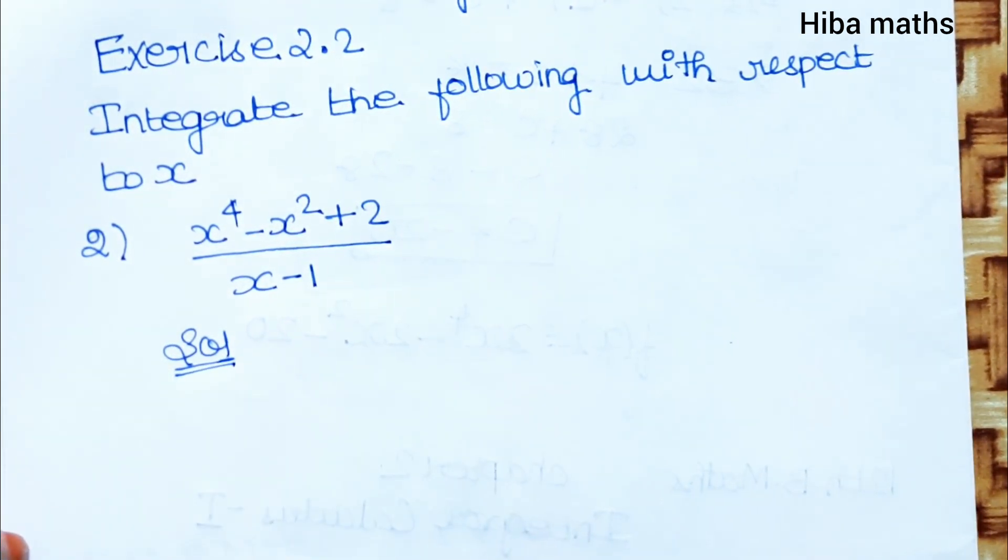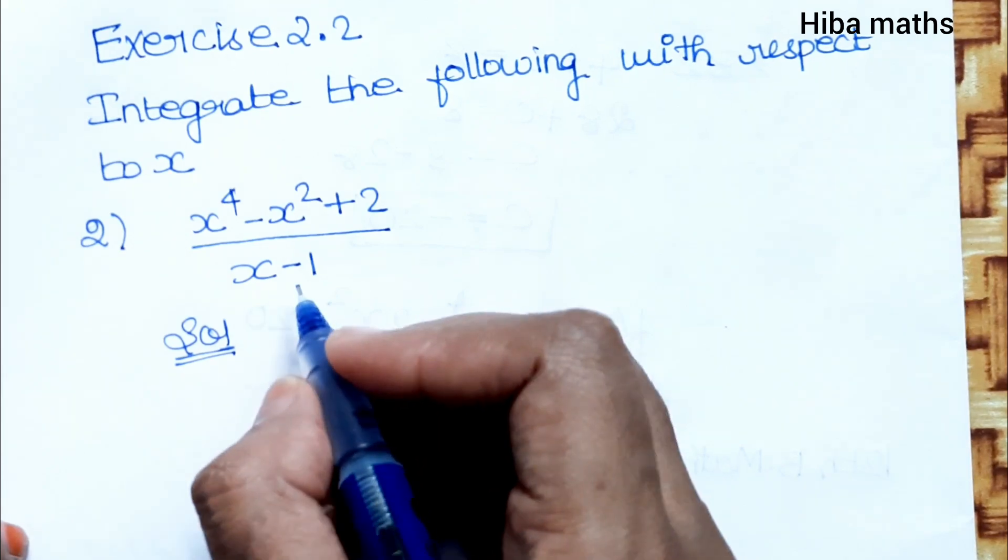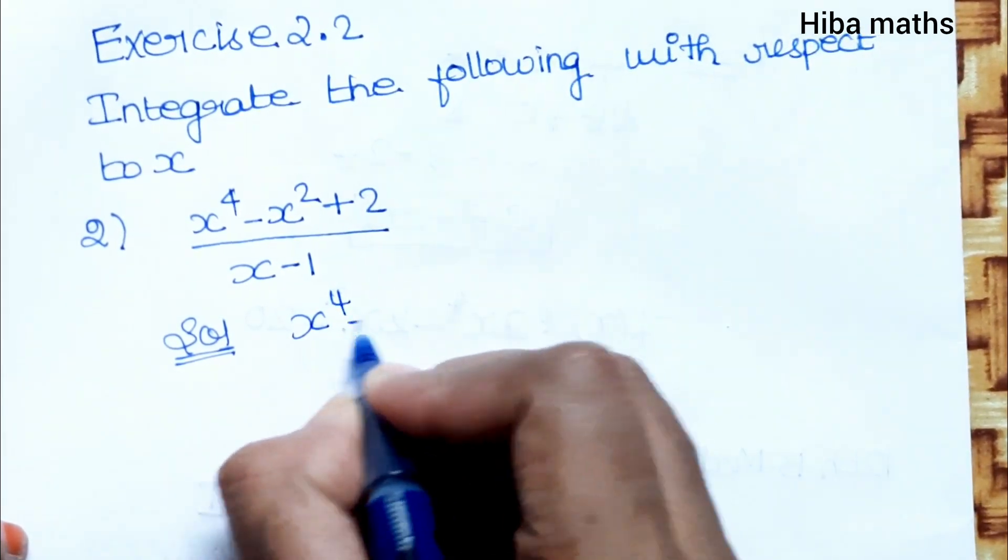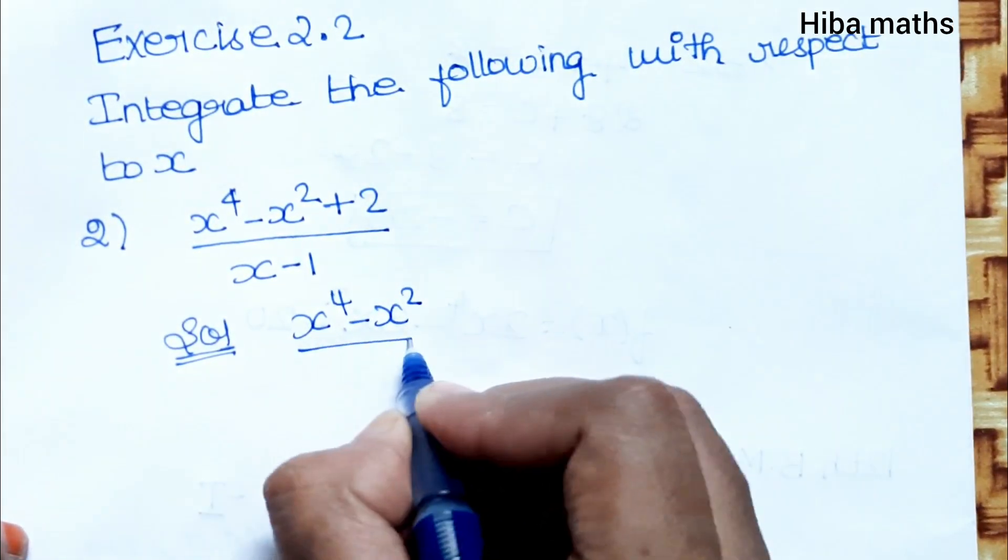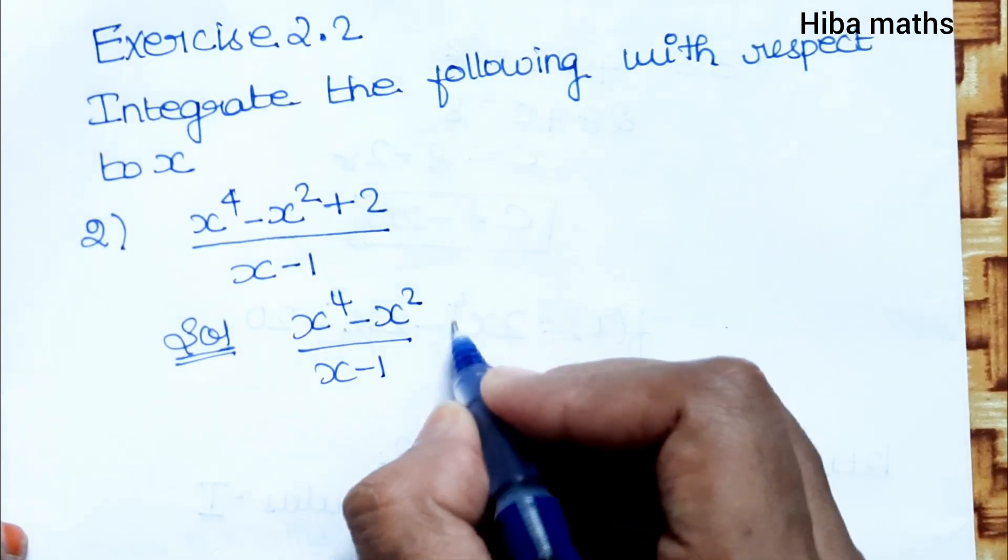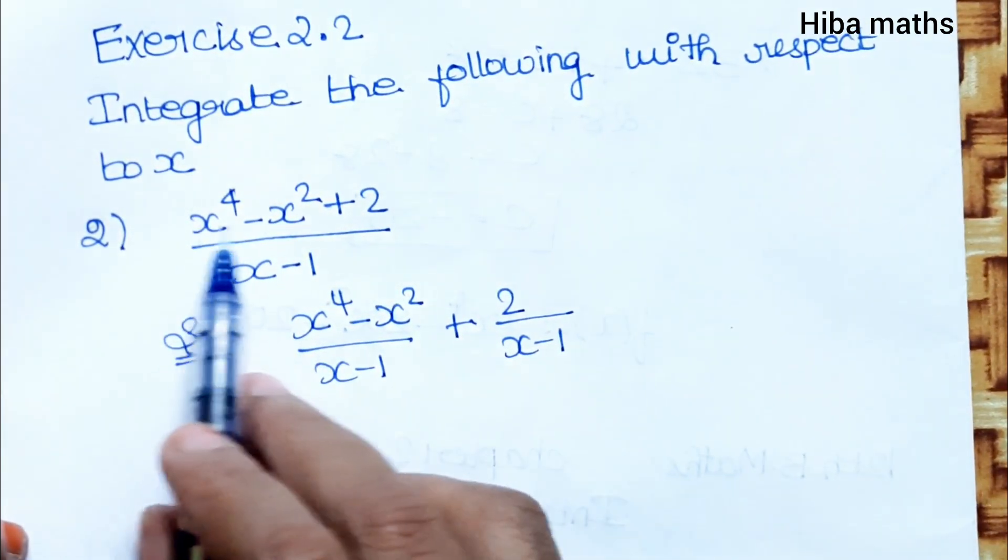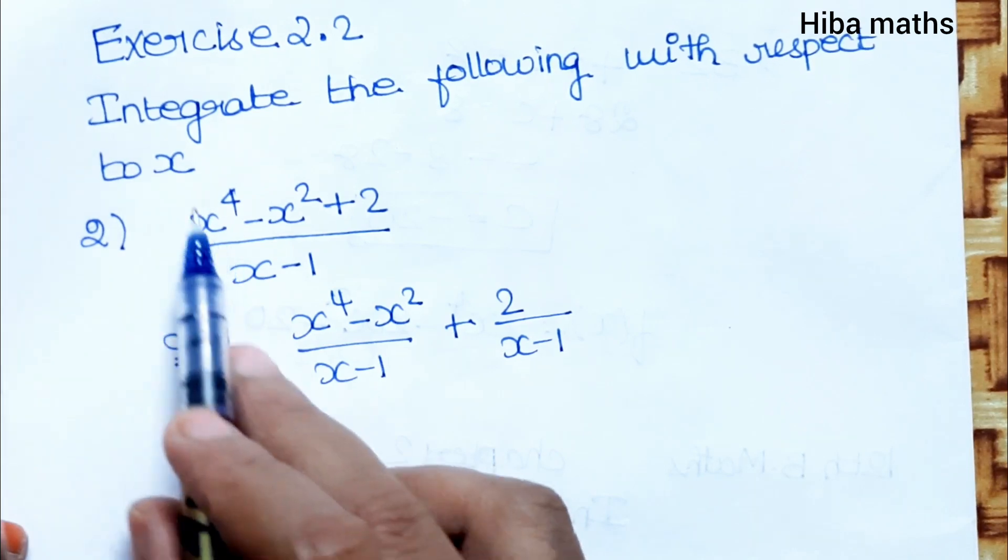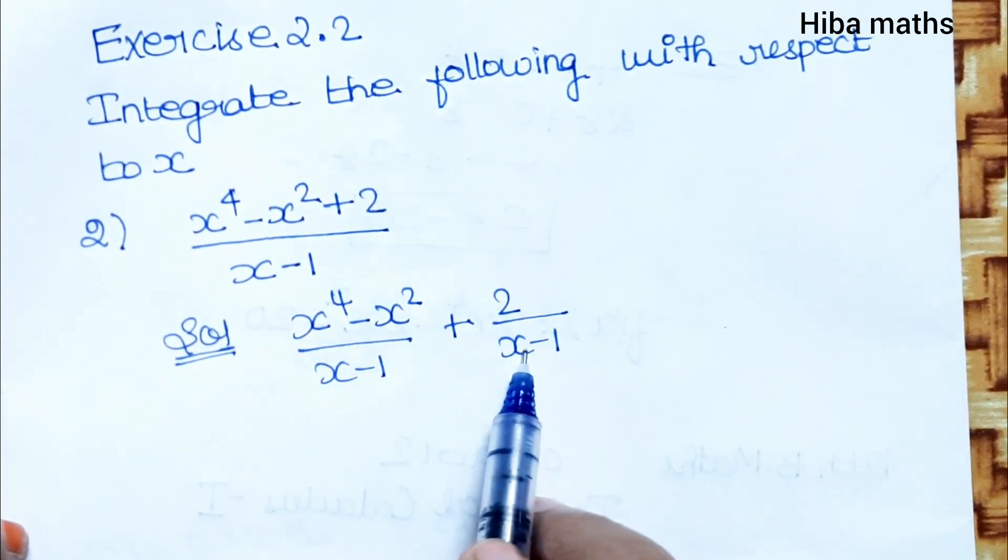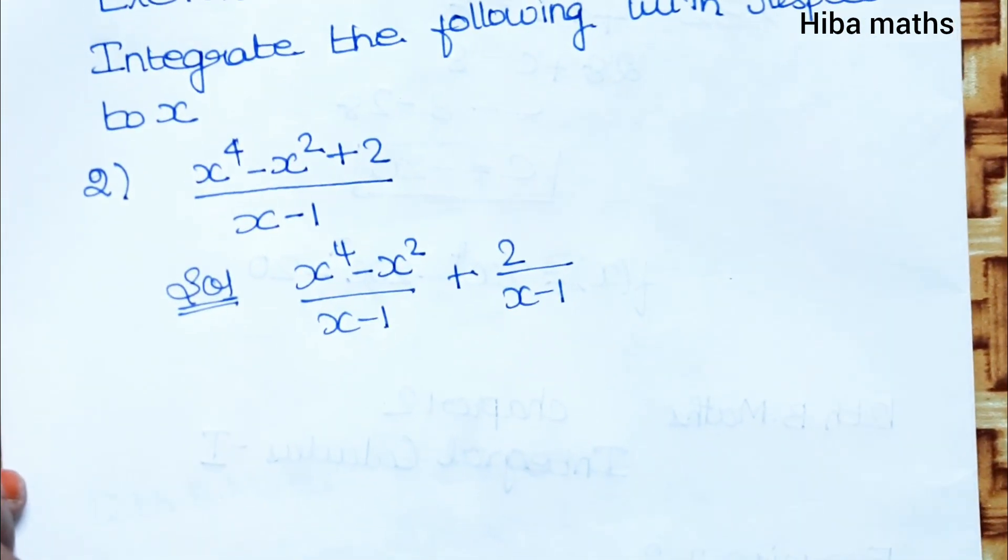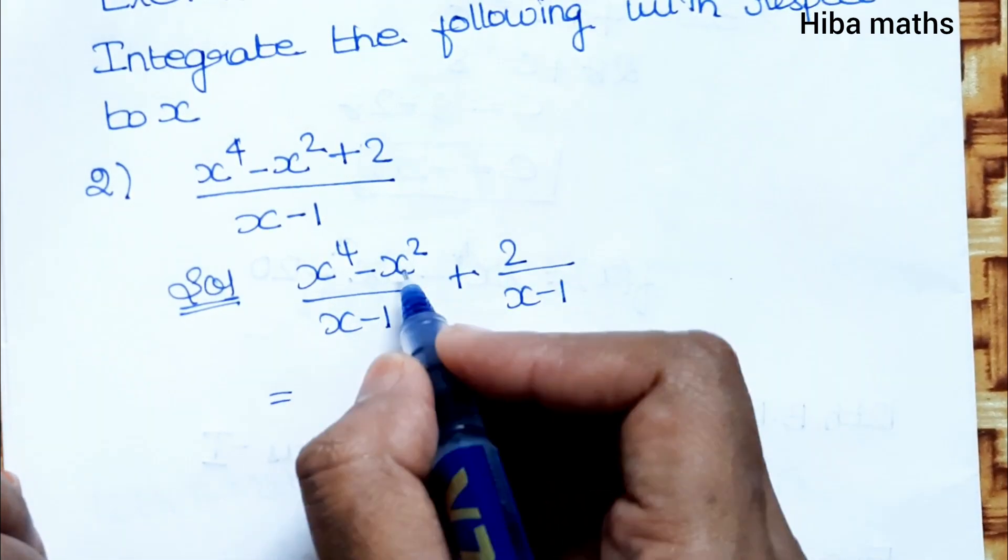This is how we can write: (x^4 - x^2)/(x - 1) + 2/(x - 1). We can write the numerator in the first place. x^4 - x^2 is equal to x^2, and we can write it as x^2 times something.